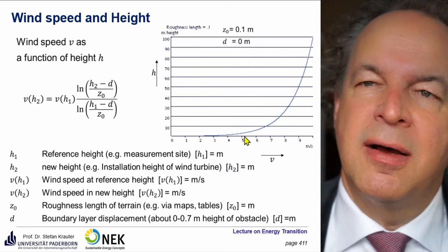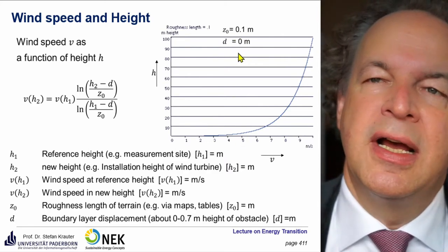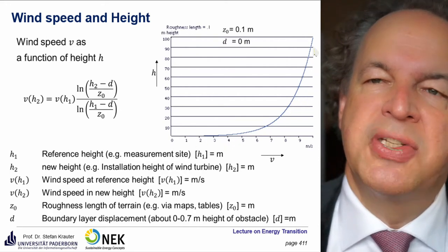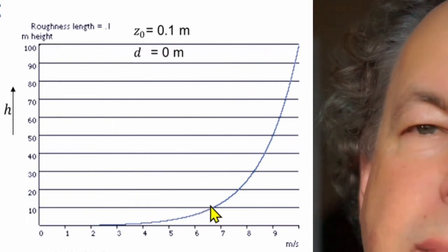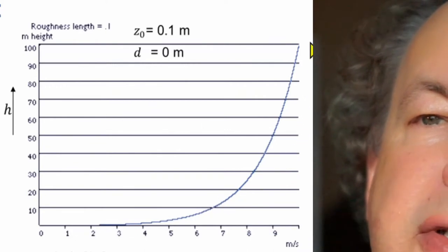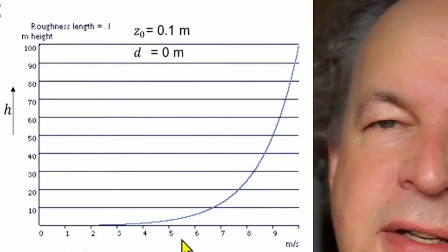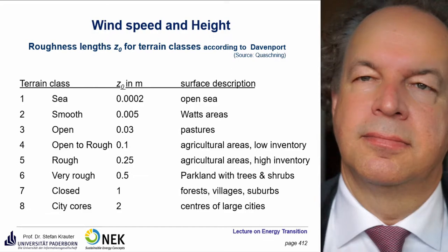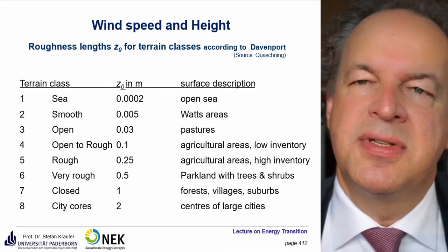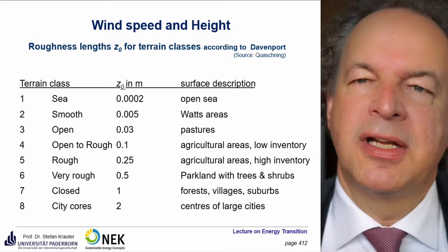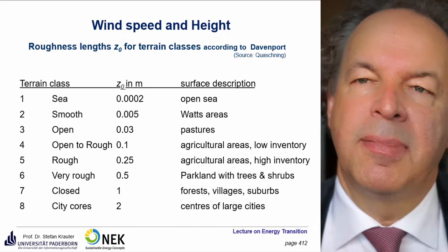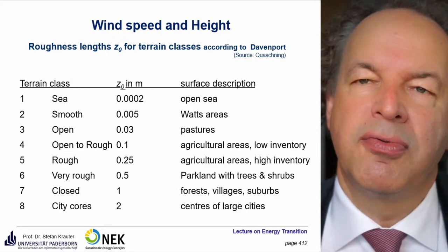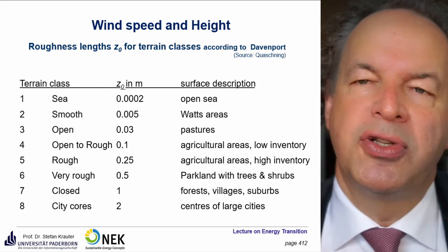Here is a table with the roughness values Z0. The sea is very flat, so it has a very low Z0 value. For open terrain like pastures, Z0 is 0.03 meters. For rough terrain, it's 0.25 meters. In the city, it's even 2 meters.